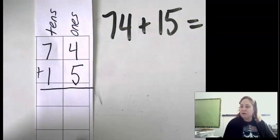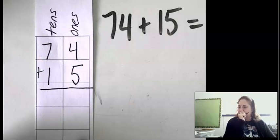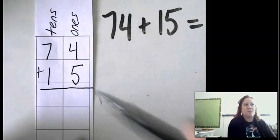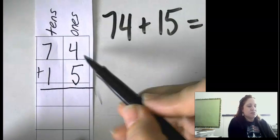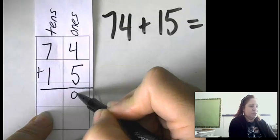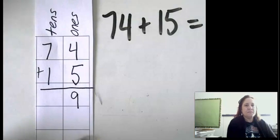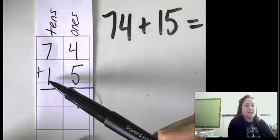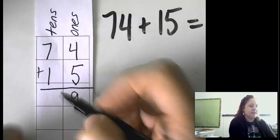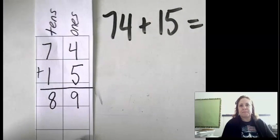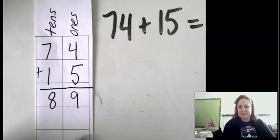So we're going to start always on the right column. These are columns, okay? Columns go up and down. So 4 plus 5 ones gives us 9 ones. And 7 plus 1 ten gives us 8 tens. So our answer is 89. Easy breezy, right?